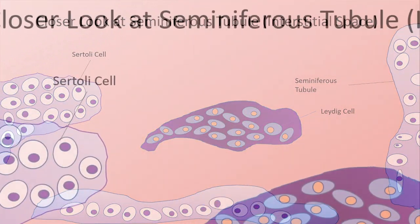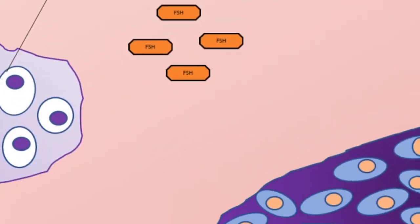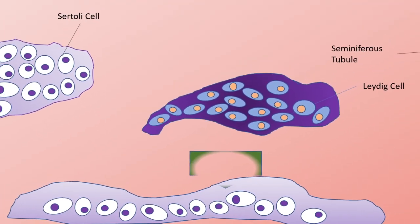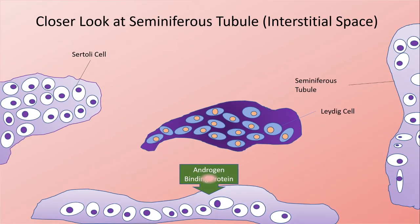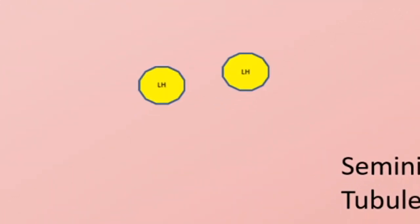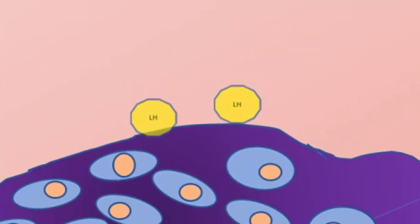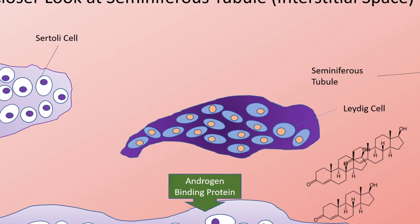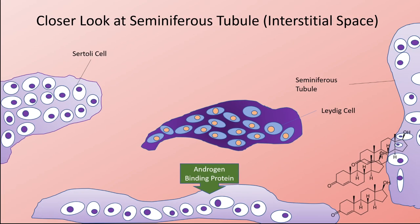FSH will target Sertoli cells located in the seminiferous tubules, which will produce androgen-binding protein, ABP. LH targets Leydig cells in the interstitial space, resulting in testosterone production. The purpose of ABP is to bind with testosterone in order to keep testosterone concentration high, which is vital for spermatogenesis.